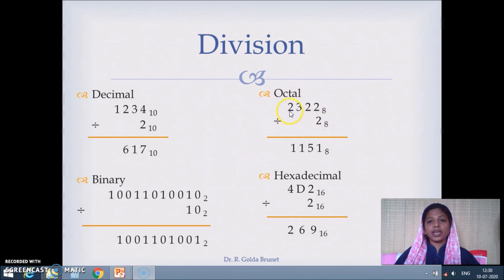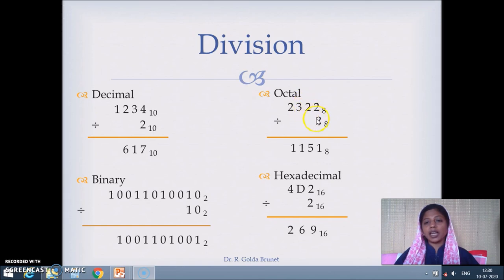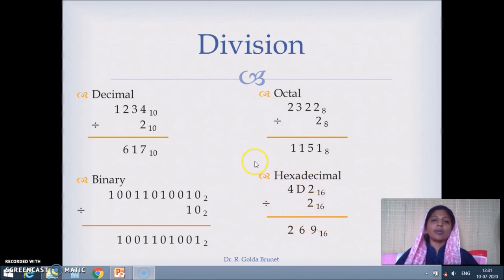For octal division: 2 divided by 2 is 1. Then 3 divided by 2 is 1 with remainder 1, giving 8 units passed to the next digit. 8 plus 2 is 10, and 10 divided by 2 is 5. Then 2 divided by 2 is 1. For hexadecimal division: 4 divided by 2 is 2. D is 13, and 13 divided by 2 is 6 with remainder 1, which passes 16 units to the next digit. 16 plus 2 is 18, and 18 divided by 2 is 9.